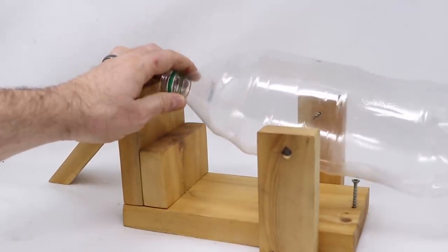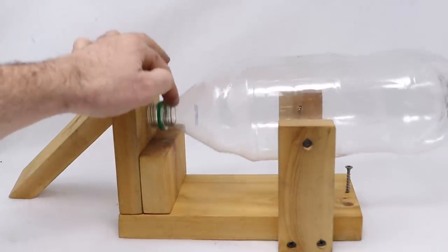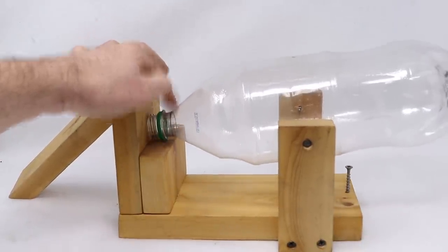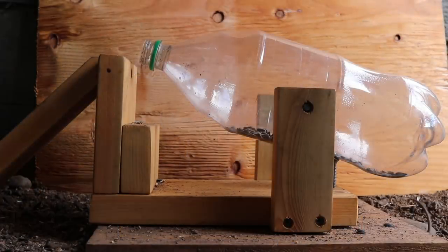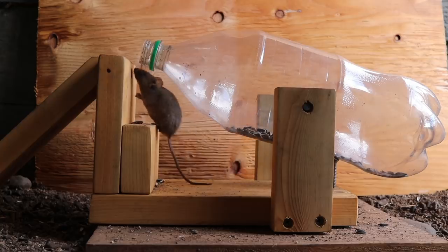So let's go set this up in the chicken coop with motion cameras and see if we can get wild mice with a teeter-totter pop bottle mousetrap.